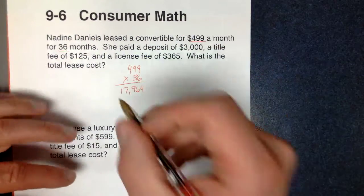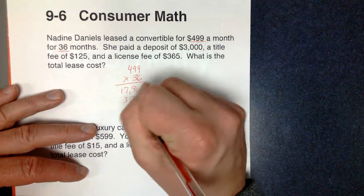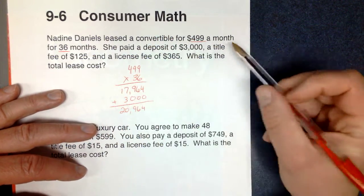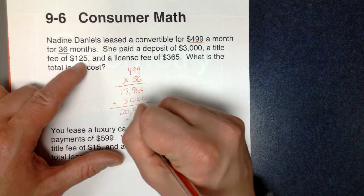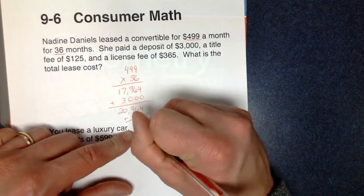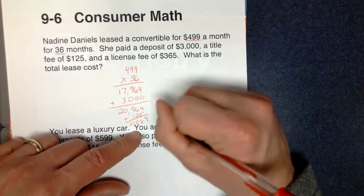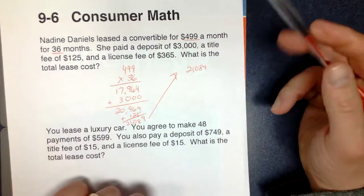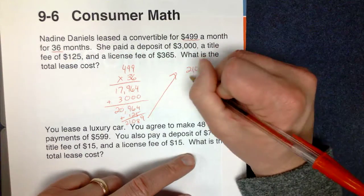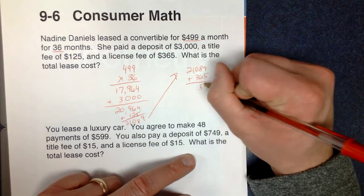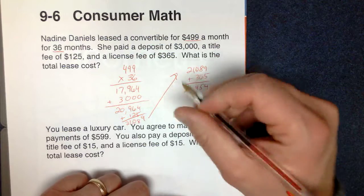She's also going to pay a deposit of $3,000, so we'll add $3,000 to that. That takes us up to $20,964. Title fee of $125, which gets us up to $21,089. I'm going to bring this up here since I ran out of room. And then the last thing we're going to pay is a license fee of $365. When we add that on there, that's going to be $21,454.